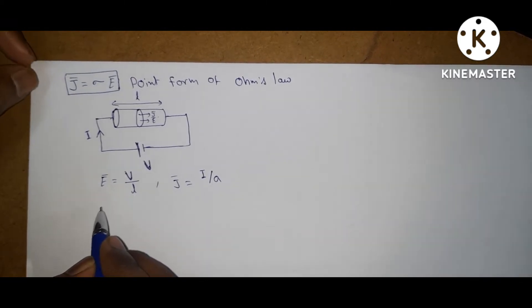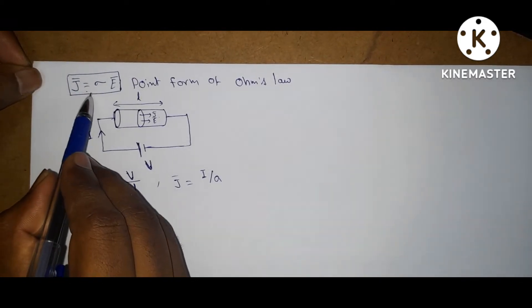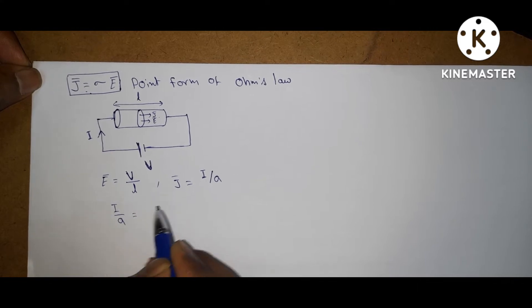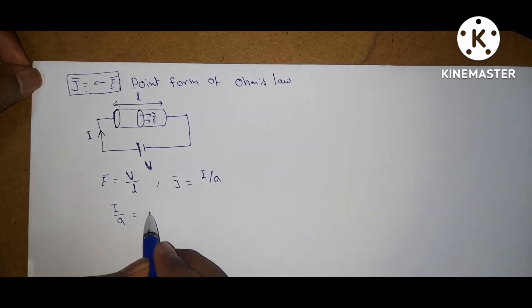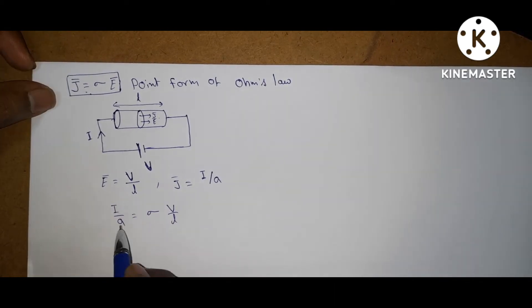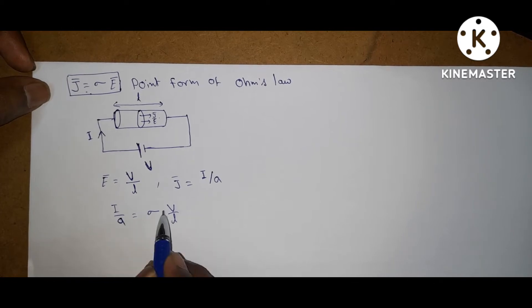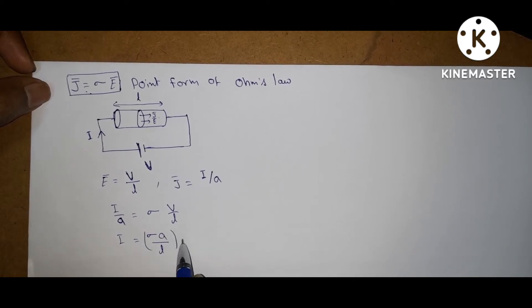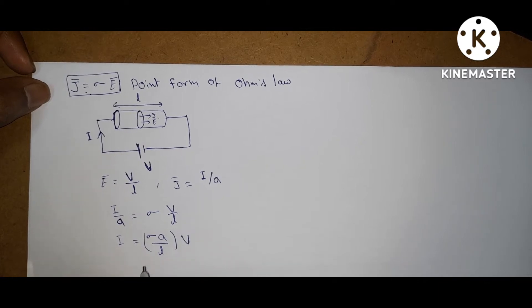Now substitute these two values into the equation J = σE. So, I divided by A equals sigma times V divided by L. Rearranging, I is equal to sigma times A divided by L, times V.